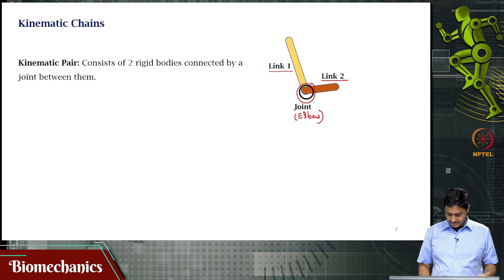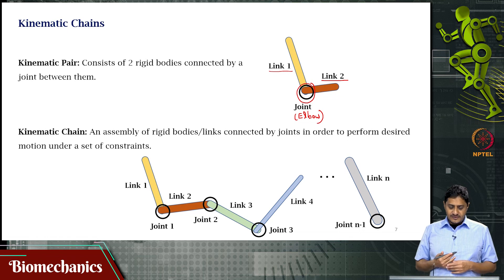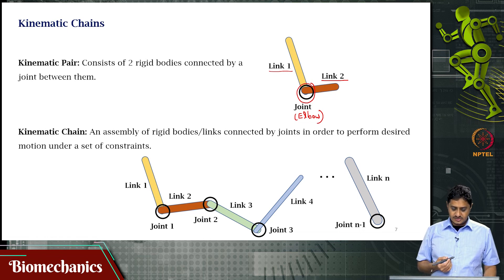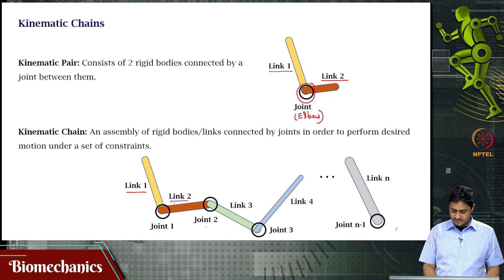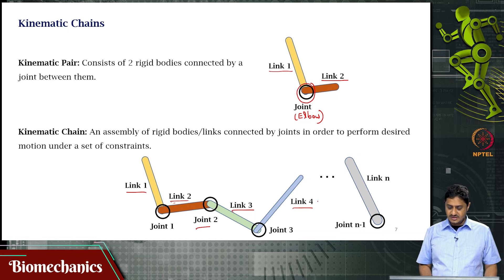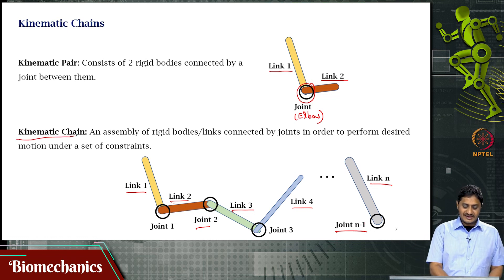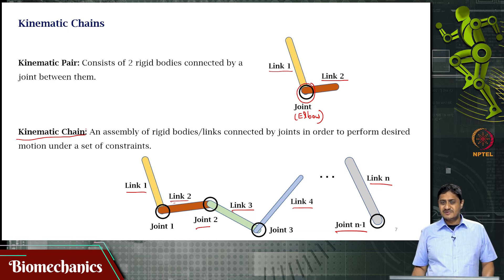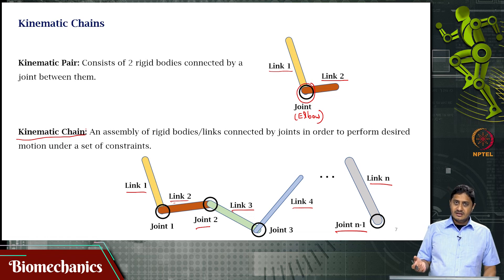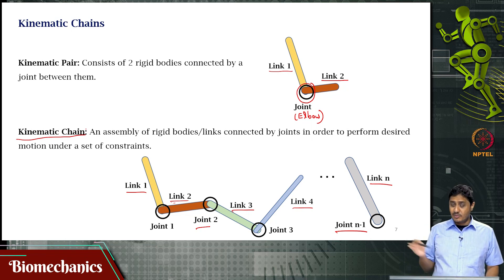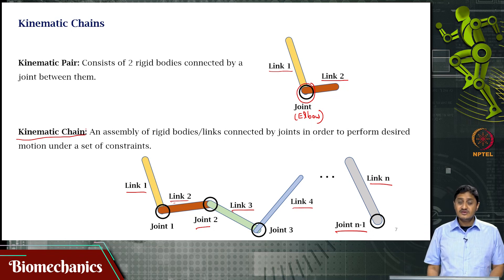An assembly of rigid bodies connected by joints — where there are n links and n minus 1 joints — such that they perform some task under some set of constraints is called a kinematic chain. A kinematic pair is a kinematic chain with exactly two rigid bodies. If you have more than two rigid bodies it is called a kinematic chain. A kinematic pair is a particular case of the more general kinematic chain.